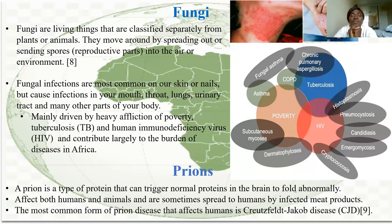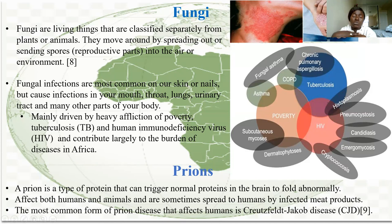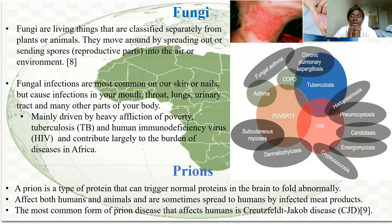Fungi are living things classified separately from plants and animals. Fungi infections typically affect the skin, nails, throat, and lungs. They spread on the skin and are heavily driven by poverty — if skin is not properly cared for and people don't have access to clean water, fungi infections can worsen. Tuberculosis and HIV also create opportunities for fungal infections to affect human beings.